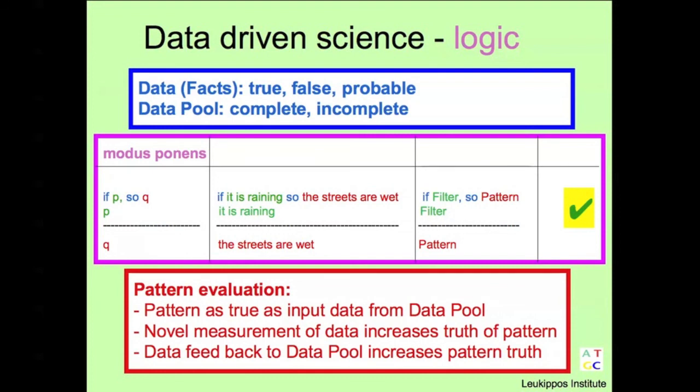In this concept the pattern is as true as the input data from the data pool. Novel measurement of data increases the truth of the pattern. The data feedback to the data pool increases pattern truth.